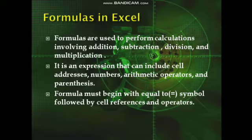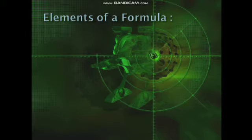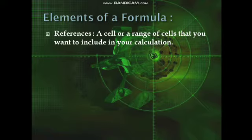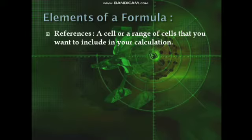An important thing with Excel is whenever you use a formula, it must begin with an equal to symbol followed by the cell references and the operators. Now we will see what the elements of a formula are. First is references — a cell or a range of cells that you want to include in your calculation. You can include one cell or a range of cells with its address. That is known as references.